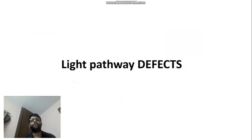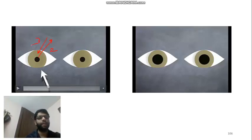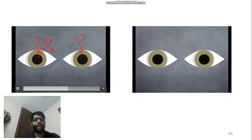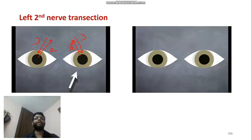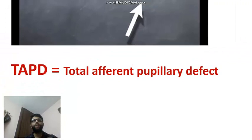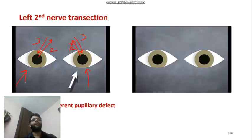For further pathway defects: you throw light in the right eye, both pupils constrict — right second nerve, right third nerve, and left third nerve are all okay. Now you throw light in the left eye: left is not constricting and even the right is not constricting. This shows the left second nerve is damaged — total optic atrophy or total transection. This is known as total afferent pupillary defect (TAPD). If you throw light in the left eye with total atrophy or transection, neither pupil will constrict.